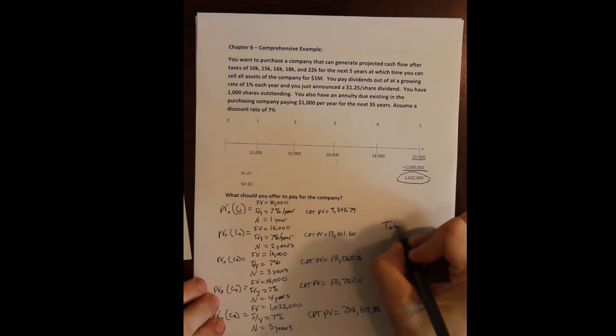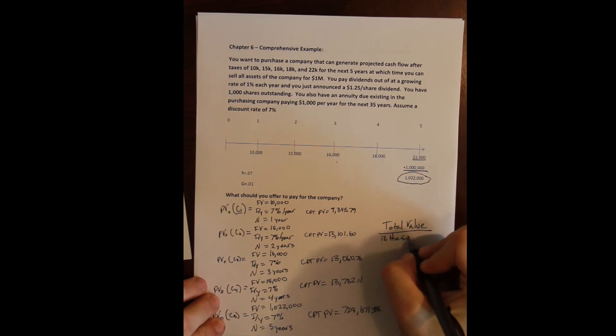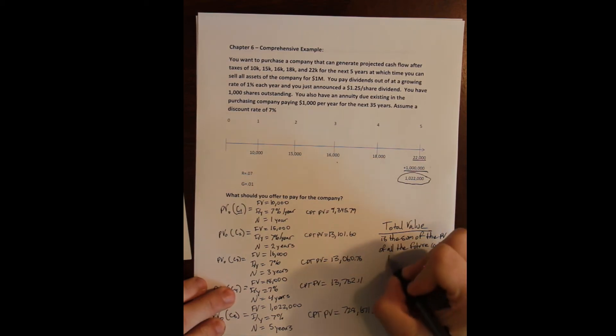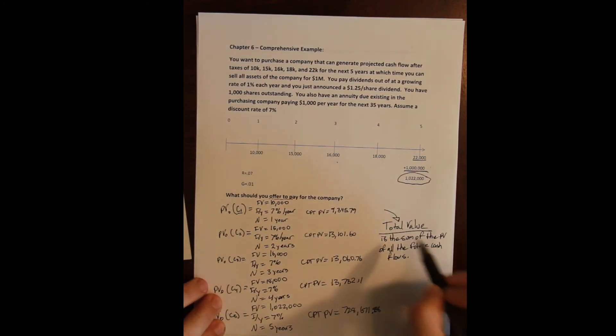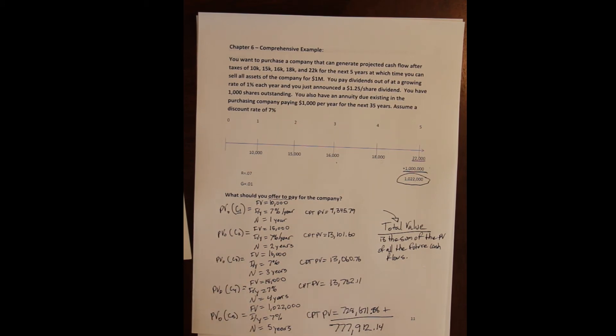So the total value of the company or of any asset is the sum of the present values of all the future cash flows. So what does that mean? To solve for what I would offer to pay for the company is the total value of the company. And to solve for the total value, I simply add up all the present values. And if I do that, I get $777,912.14. So what should I offer to pay for the company? I should offer to pay this or less, right? No more, because I know exactly what the present value of the future cash flows is going to be, and it's not going to be worth any more than this.